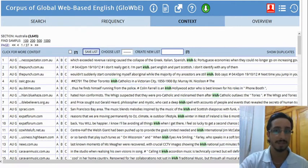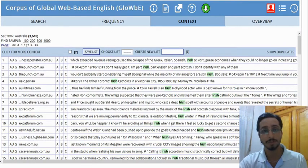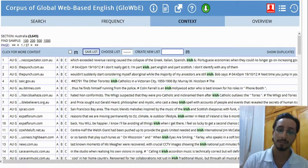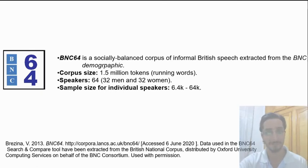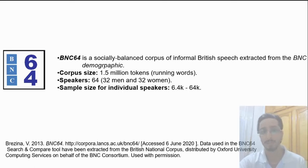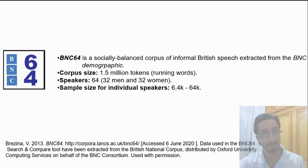Now let's move to the second part of the video, in which we see how a certain linguistic item or feature is used either similarly or differently between male and female speakers. To do that, we'll visit the BNC64. As you can see, it is extracted from the BNC demographic. The corpus is made of approximately one and a half million words, and the speakers are 32 men and 32 women. The sample size per individual speaker is between approximately 6,000 and 64,000 words, so here it makes more sense to normalize per 10,000 words.